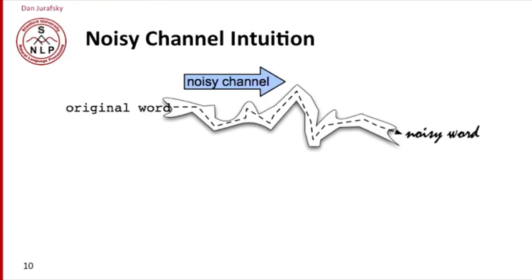We have some original signal, let's say it's a word, and we imagine that it goes through some channel. The idea was originally invented for speech, where you talk into a tube or go over some telecommunications line, and the word is distorted. So what comes out from the original word is some noisy word.